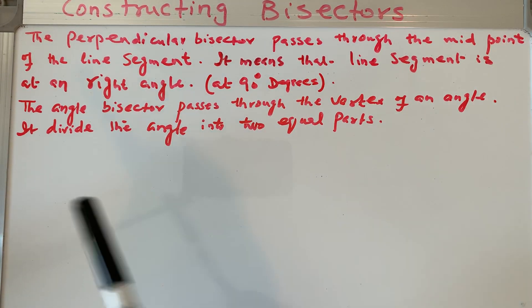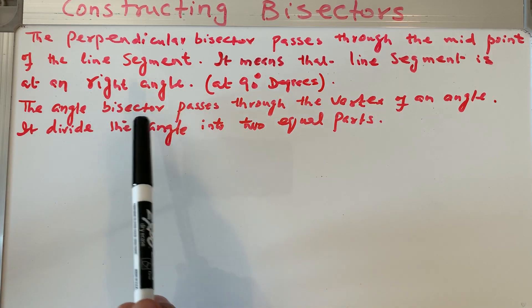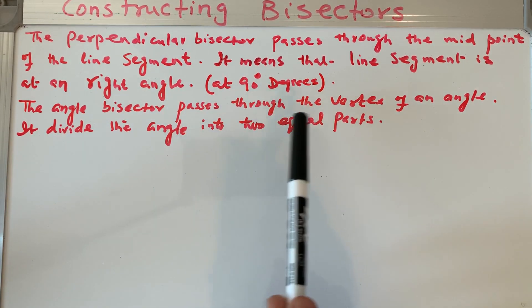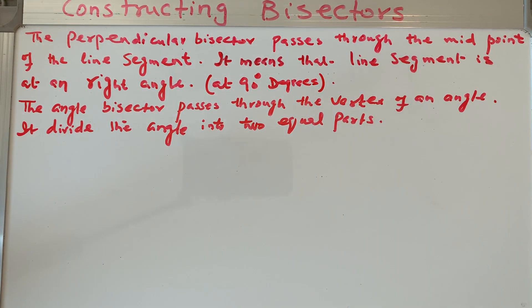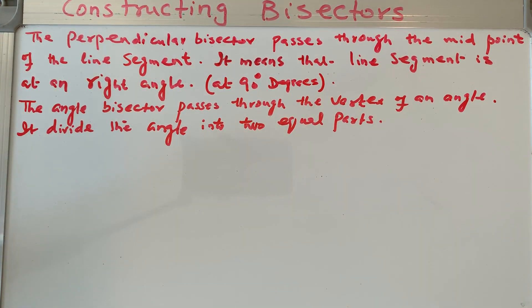The second definition: the angle bisector passes through the vertex of an angle and divides the angle into two equal parts. And we are learning today how to construct these bisectors.